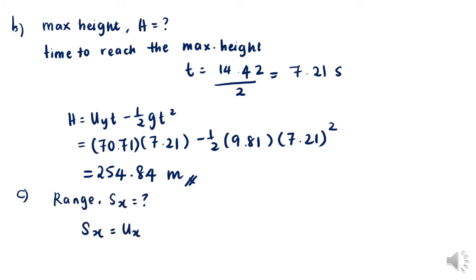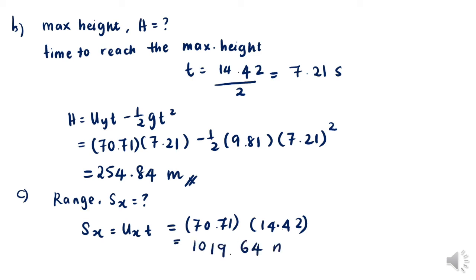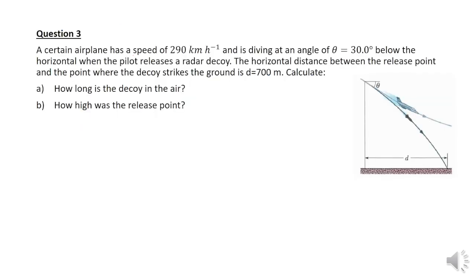For part c, finding the range involves the x-component. We apply sx equals ux times t. Substituting all values, we get a range of 1019.64 meters.